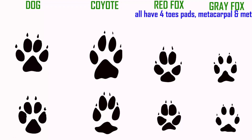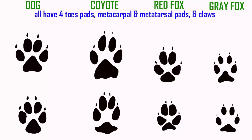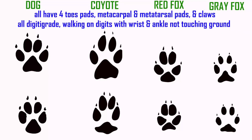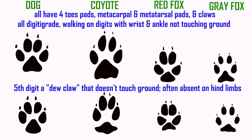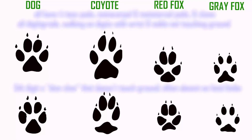If you were to compare the prints of dogs — such as a domestic dog, a coyote, a red fox, and a gray fox — you would notice that there are four toe pads on both the front and hind legs, and there are heel pads. This is where the metacarpals and the metatarsals touch the ground, not the wrist or ankle area, which are higher on the foot given that they are walking in a digit-grade fashion. There is a fifth digit, the dewclaw, which doesn't touch the ground and can be absent on the hind limbs.